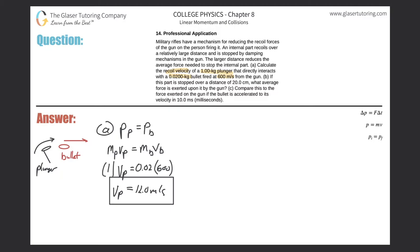Letter B: if this part is stopped over a distance of 20 centimeters, what average force is exerted upon it by the gun? The plunger, after recoiling, is going to be stopped by an object inside the gun. The stopping distance is 20 centimeters, and the recoil velocity of the plunger going backwards was 12 meters per second.